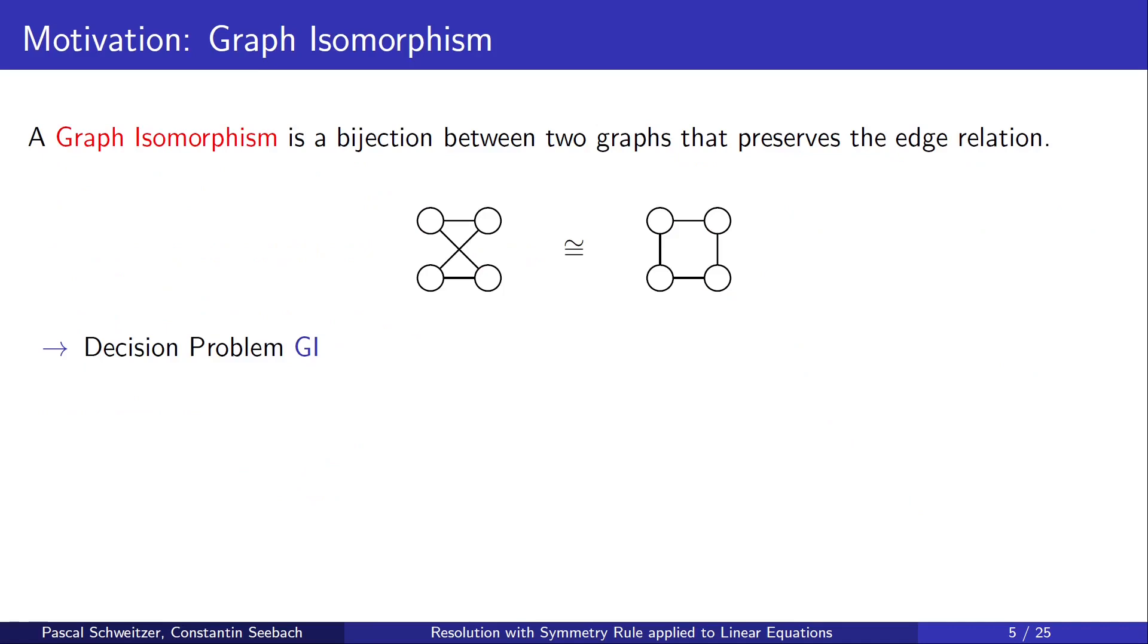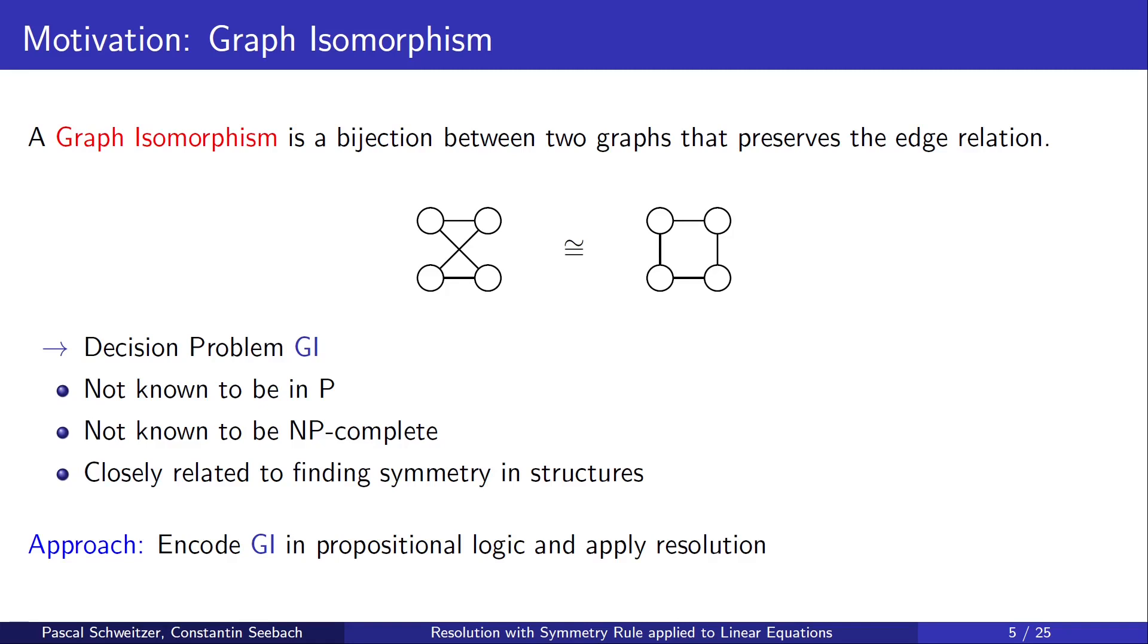The main motivation for our work came from graph isomorphism. A graph isomorphism is a bijection between two graphs that preserves the edge relation. We have a decision problem GI where we ask whether such a graph isomorphism exists between a pair of graphs. This problem is not known to be in P and it's also not known to be NP-complete, so it's a candidate for NP-intermediate. Also, it's closely related to finding symmetry in structures.